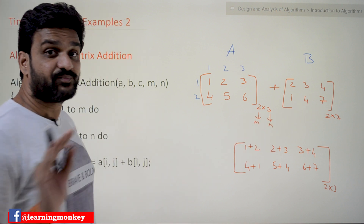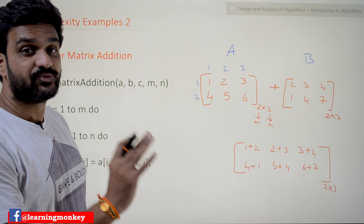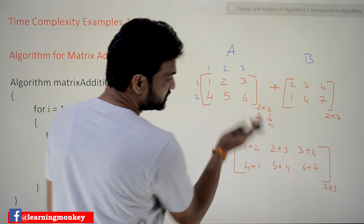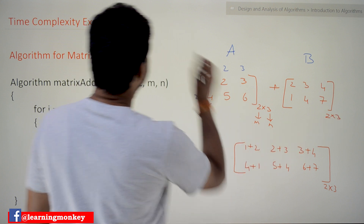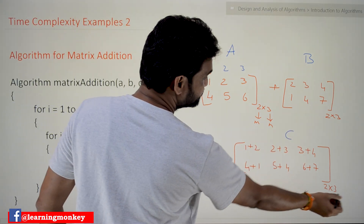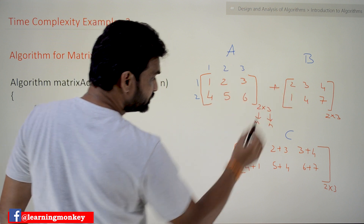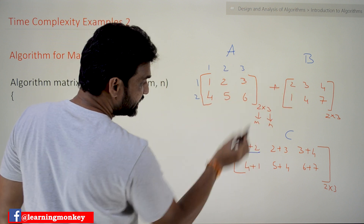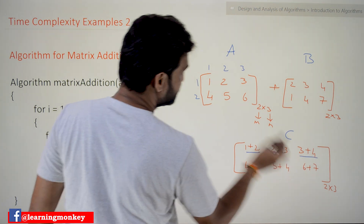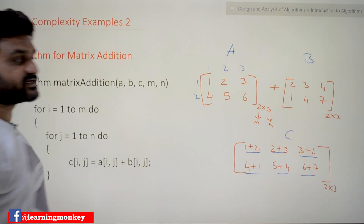The very important rule for matrix addition is that both matrices should be of the same size. In this case we have two matrices, both of size 2 by 3, and the resultant matrix C is also of the same size. Matrix addition is done element-wise: 1+2, 2+3, 3+4, 4+1, 5+4, and 6+7 — each corresponding value gets added and stored in the result.